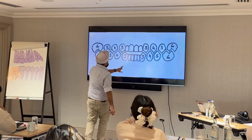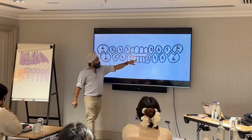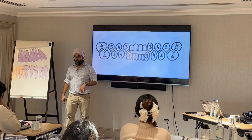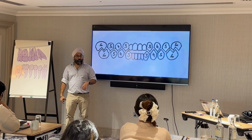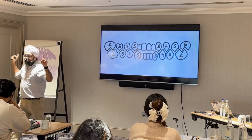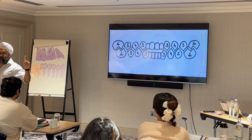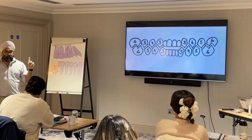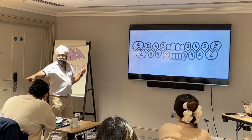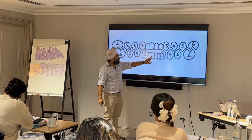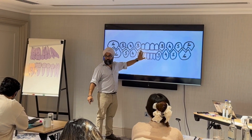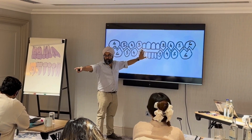If you take out a lower incisor, what's the canine relation going to be? What did I tell you in the beginning? What are you planning on doing with your canine relations? Keep them in class 1. You keep them in class 1, everything is going to be okay. You start moving your canine relations — if you take out this tooth, your canine relations are going to go forward ever so slightly, starting to go class 3.